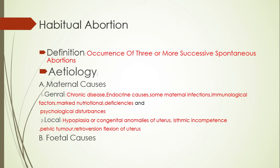In hypoplasia of the uterus, in each pregnancy the duration of pregnancy before abortion is prolonged — for example, the first abortion at five weeks, the next at six weeks, then eight weeks, and so on. So the abortion occurs in ascending schedule. Congenital anomaly of the uterus — such as subseptate or septate uterus — causes habitual abortion. Pelvic tumors such as fibroid, particularly submucous fibroid, and retroversion-retroflexion also cause habitual abortion.